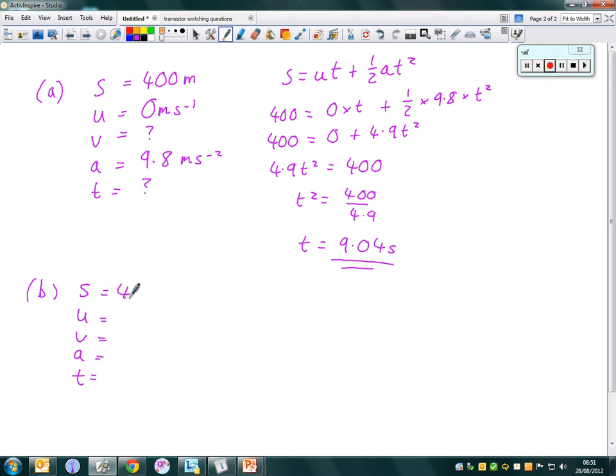This is still 400 meters. This is still zero. The acceleration is still 9.8 meters per second squared. We don't know v because that's what we're trying to figure out. And t is 9.04 seconds. So we're looking for v, we've got s, u, a, and t.